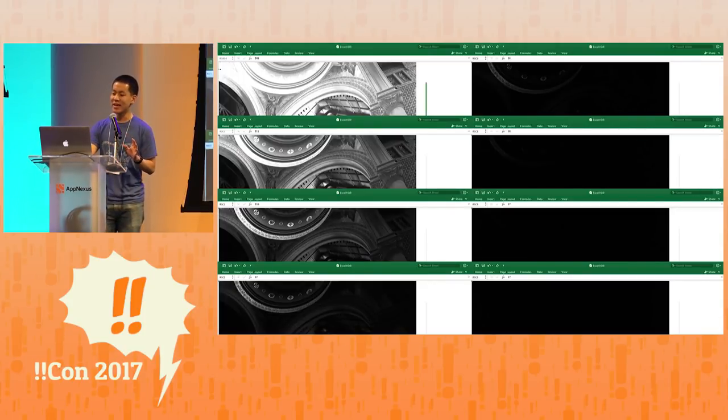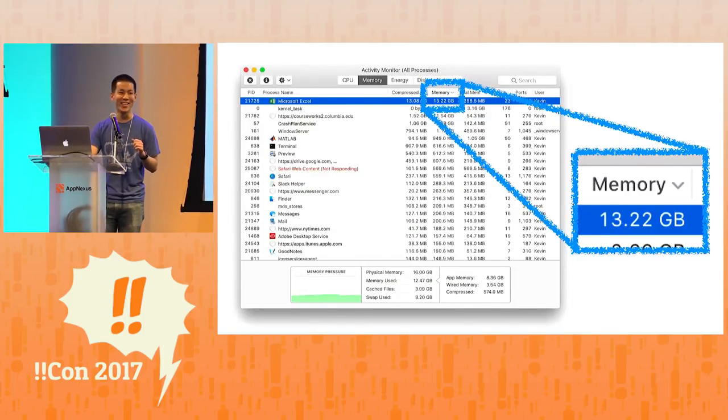So I did this seven more times for all of my images. And after that, Excel started using 13 gigs of RAM. So like any obedient Microsoft customer, I rebooted my computer in order to continue working.